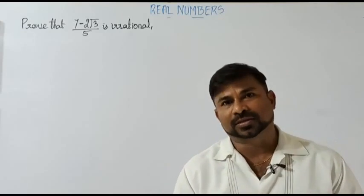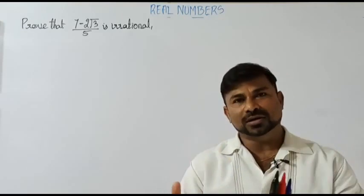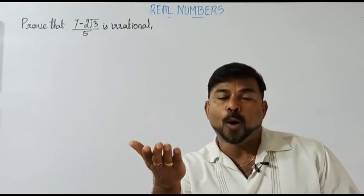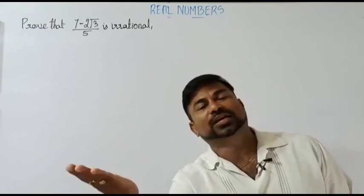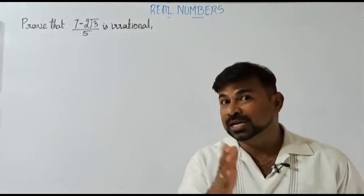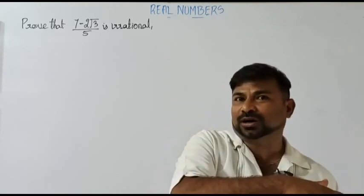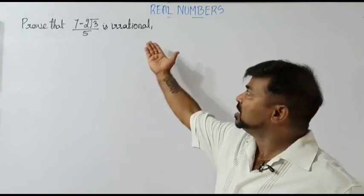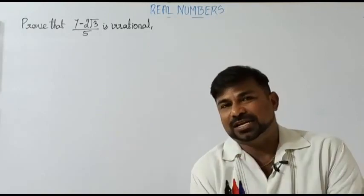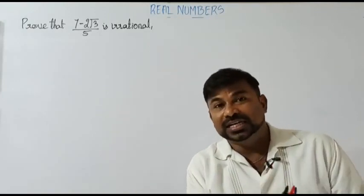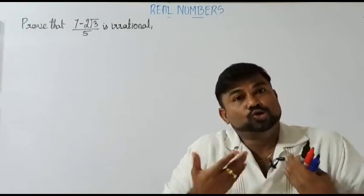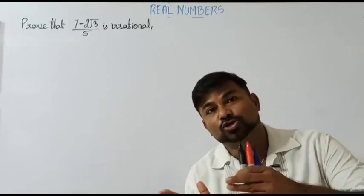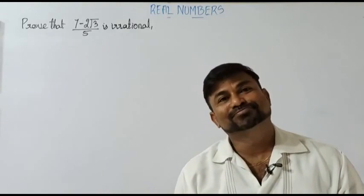Let me tell you what the contradictory method means. A contradictory method means we'll be taking the opposite of what is required to prove. Here, we are supposed to prove it as an irrational number, so we assume as if the given expression is not irrational — we assume it as rational.